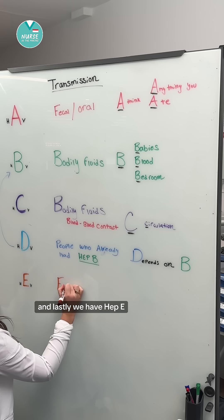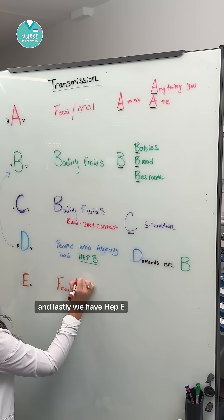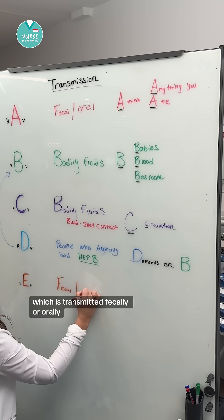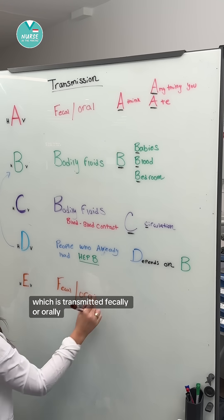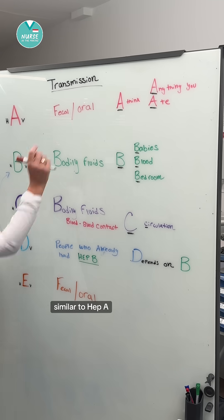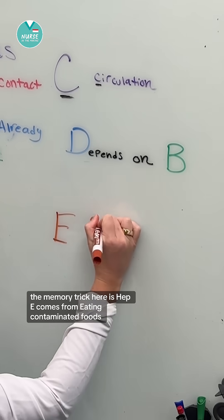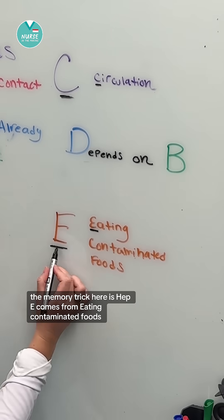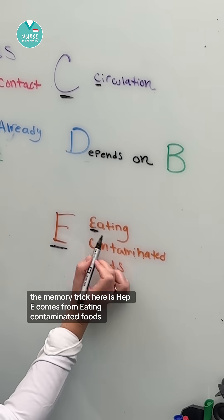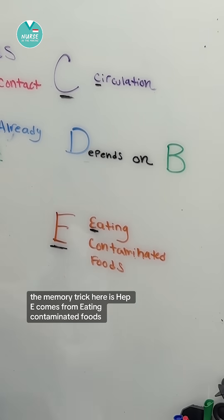Lastly, hep E is transmitted fecally or orally, similar to hep A. The memory trick here is hep E comes from eating contaminated foods.